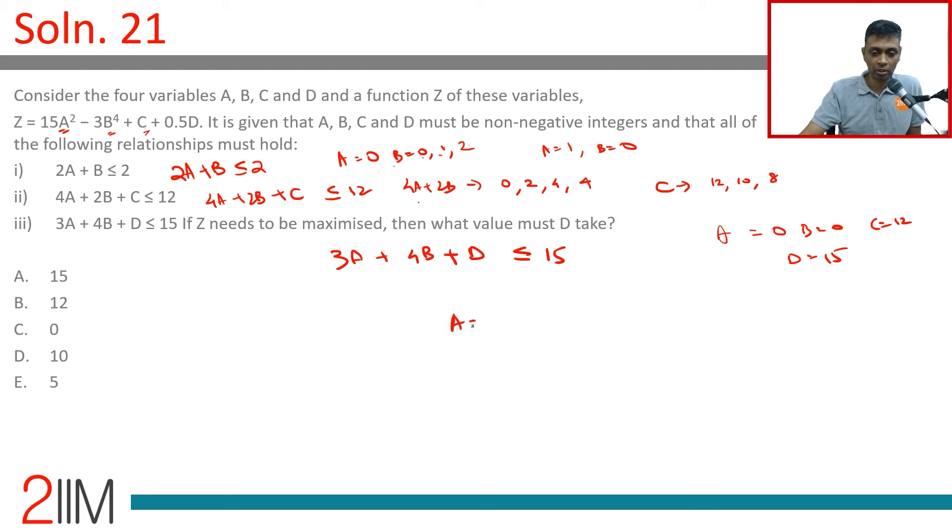Other possibility: put A = 1, B = 0. 4A is 4, C can maximum be 8. 3A is 3, D maximum could be 12. These two are the compelling possibilities.